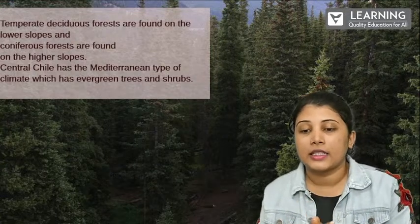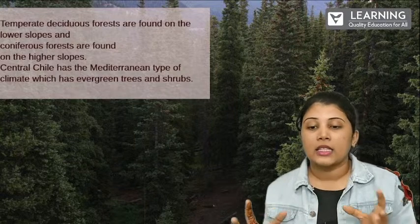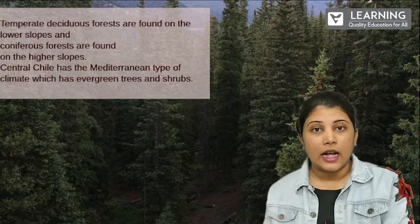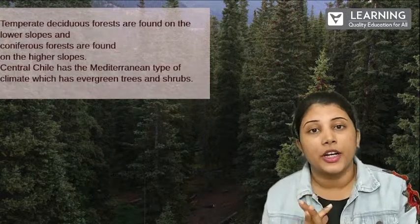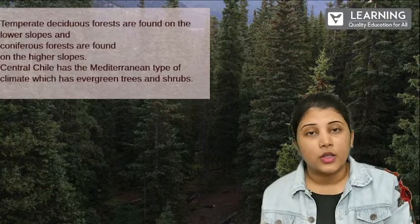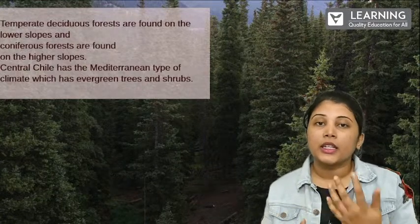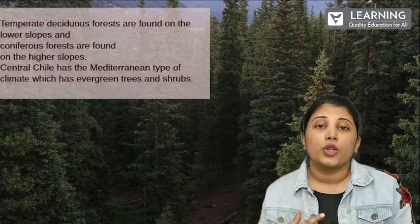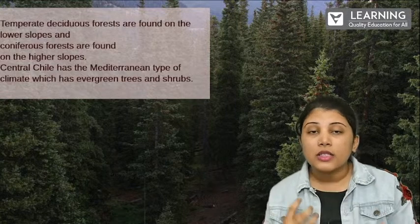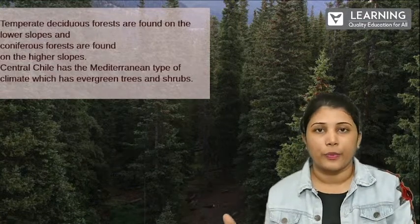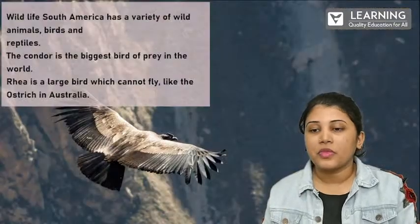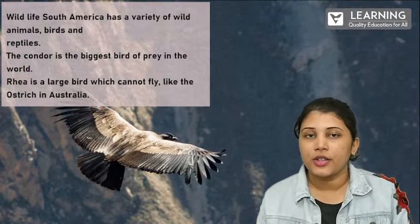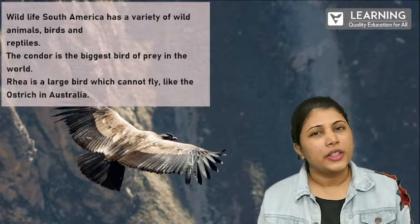Central Chile has a Mediterranean type of climate which has evergreen trees and shrubs. In Central Chile, the climate changes seasonally and you will find evergreen trees, evergreen shrubs, and grasses all around — due to rainfall. Now we have seen natural vegetation; next we will see something about wildlife.